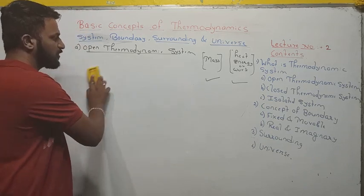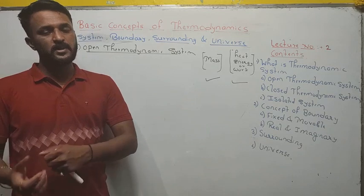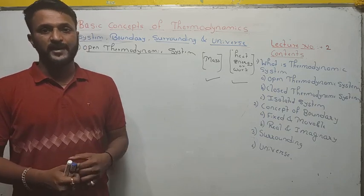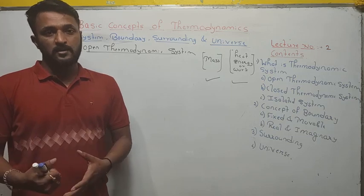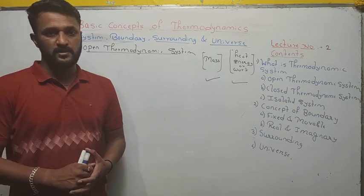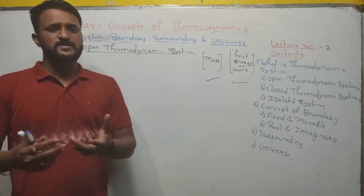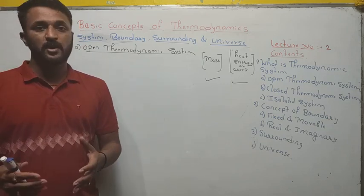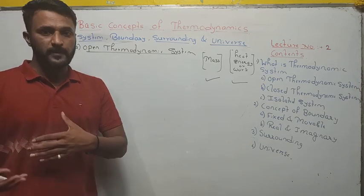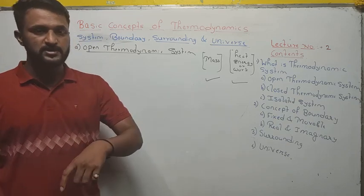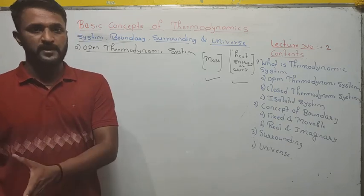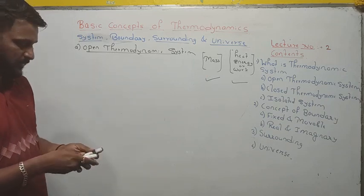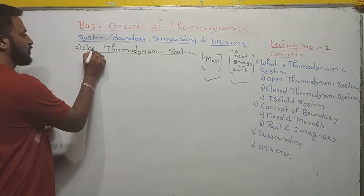Another example of an open thermodynamic system is a compressor. A compressor is a device used to compress air. In service stations, the compressor sucks air from the atmosphere at normally one bar pressure, compresses it, and increases the pressure. That high-pressurized air can be utilized in pneumatic tools, spray painting, and many other applications. This is an open thermodynamic system because air, which is a mass, comes into the system, gets compressed, and goes out — so mass crosses the boundary. At the same time, energy is supplied to run the compressor, so work also crosses the boundary.